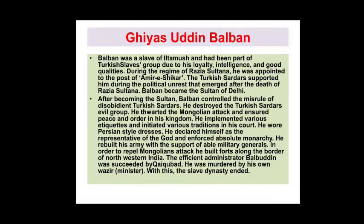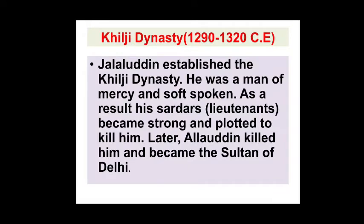After becoming Sultan, Balban controlled the misruled and disobedient Turkish sardars and destroyed the Turkish sardar evil group. When Mongols attacked again, he maintained peace and order in the kingdom. He wore Persian-style dresses, declared himself as the representative of God, and enforced absolute monarchy. He rebuilt his army with the support of able military generals, and built forts along the border of northwestern India to repel Mongol attacks. He was an efficient ruler, efficient administrator, and successful in the Delhi Sultanate.